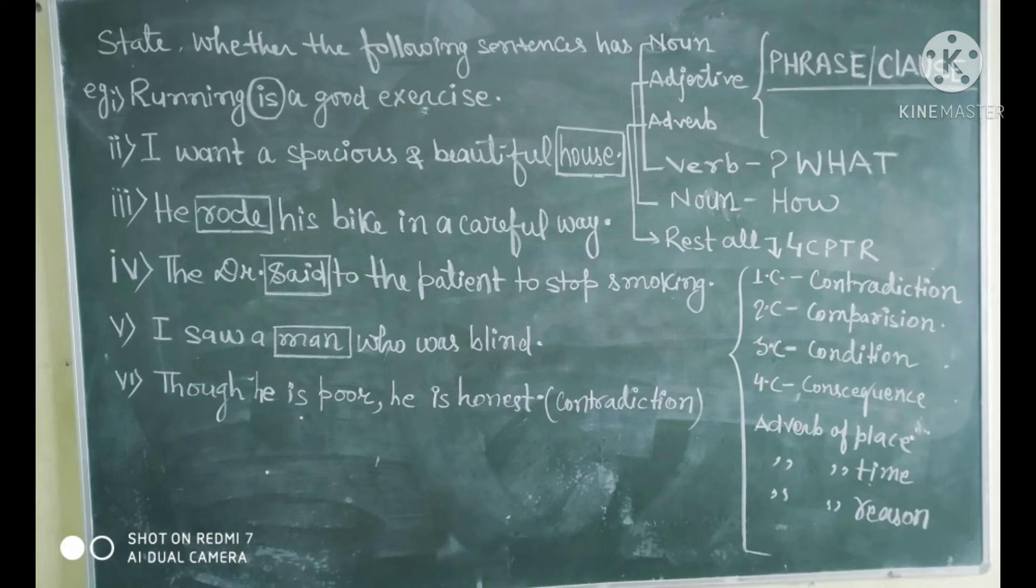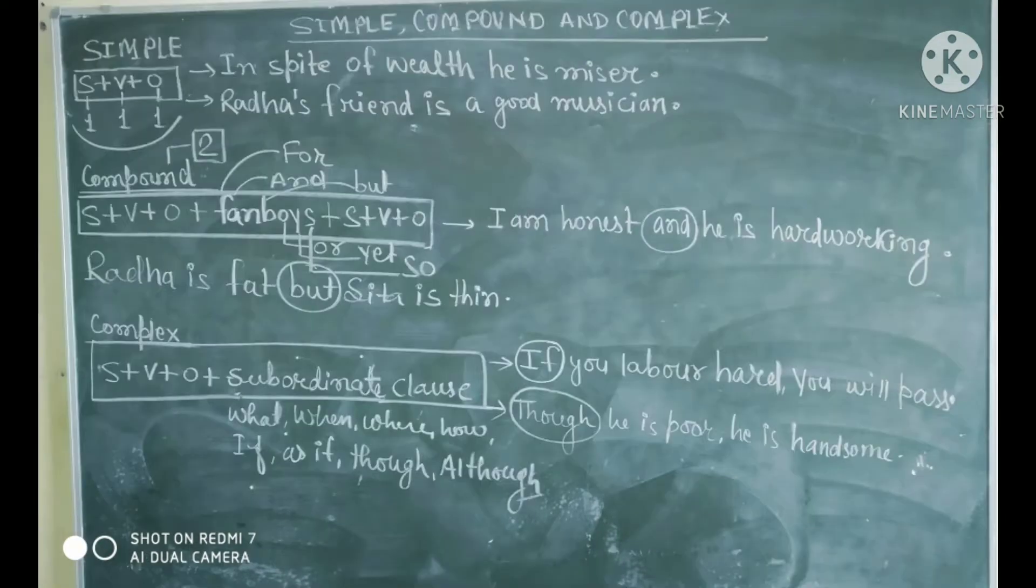Now, come to question number three. In question number three, you are finding he rode his bike in a careful way. Yaha pere road ko dhekho, मैंने square में enclosed किया है. Yeh verb hai. Verb se question puchho kis tarike se? Way. Ab way kya hai? In a careful way. That's why it became your adverbial phrase.